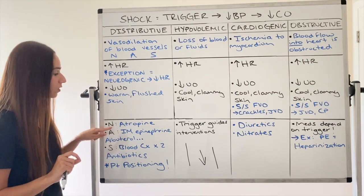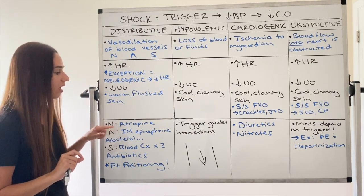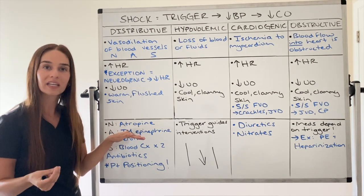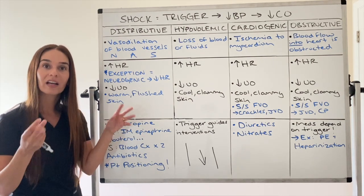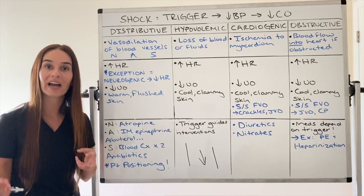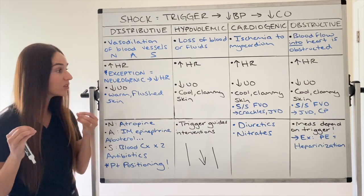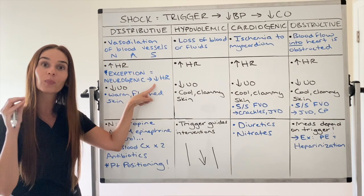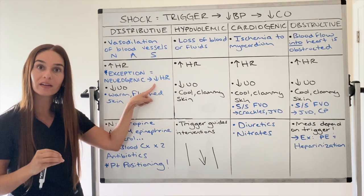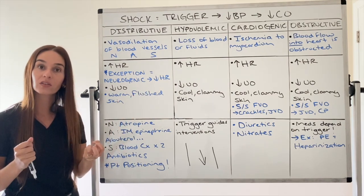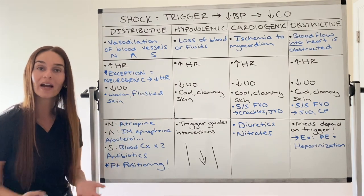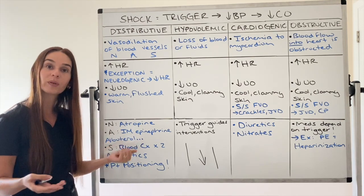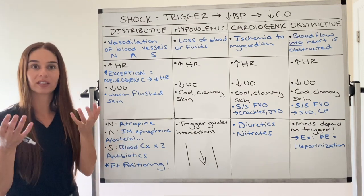Let's start with neurogenic shock. A medication you would only give for neurogenic shock is atropine. Why? Because neurogenic shock is one of the only shocks that presents with bradycardia. If that heart rate gets too low, we may need to give medication such as atropine to increase it back up.